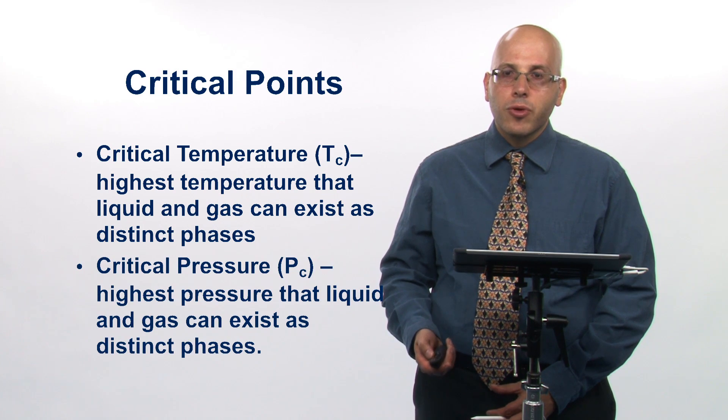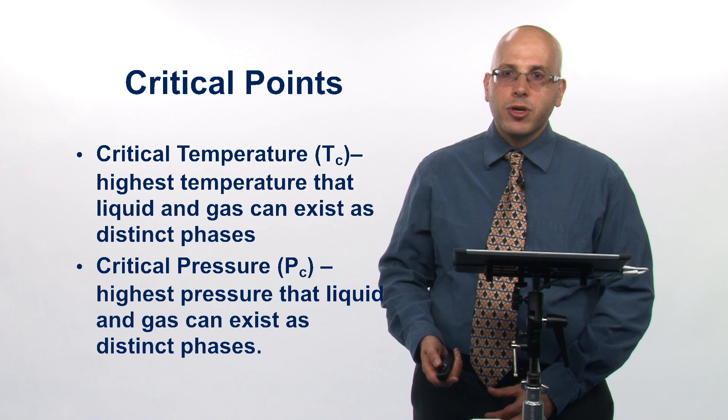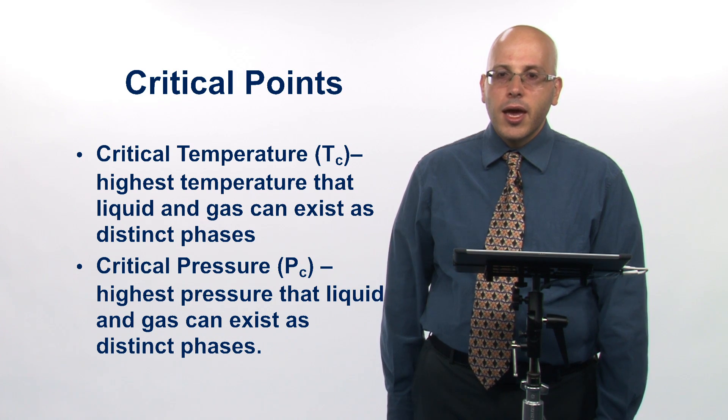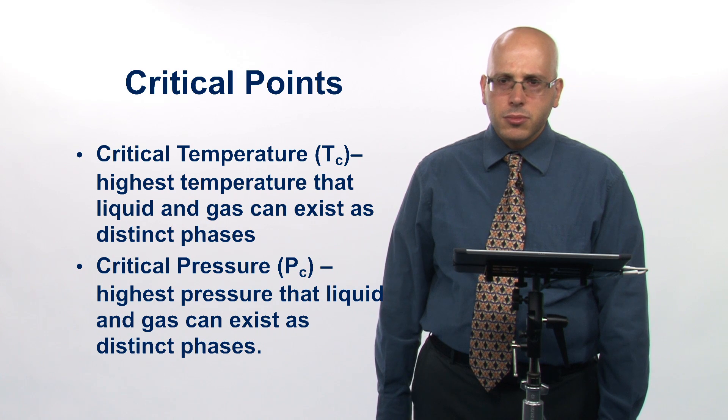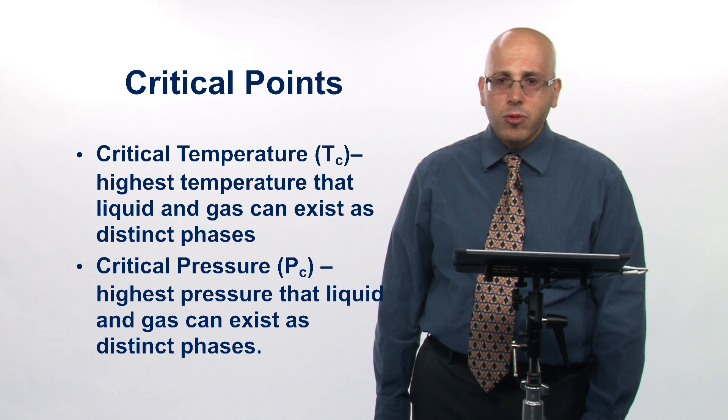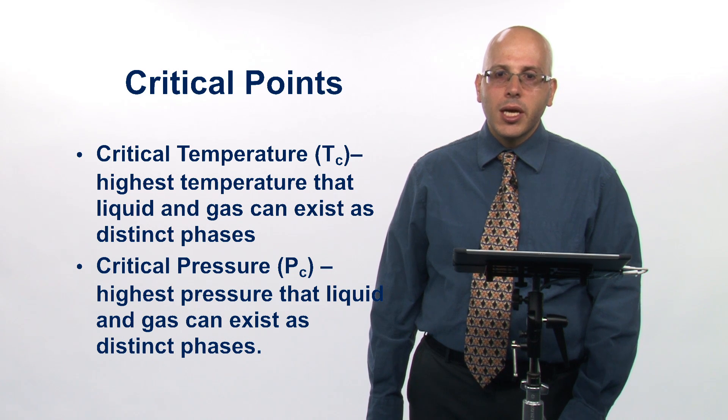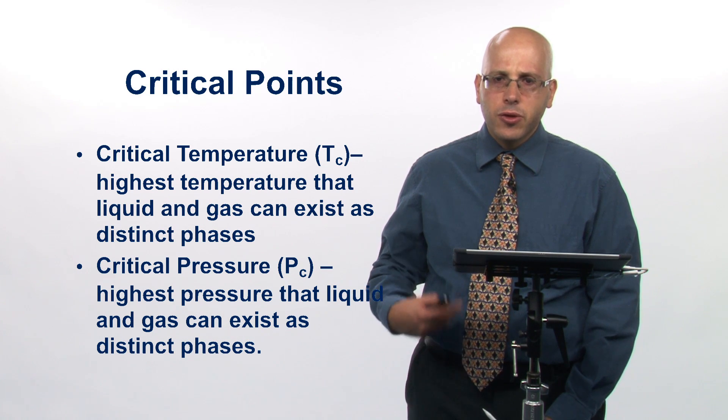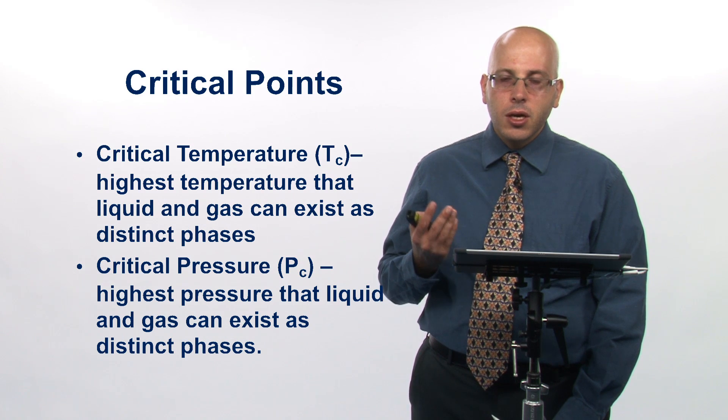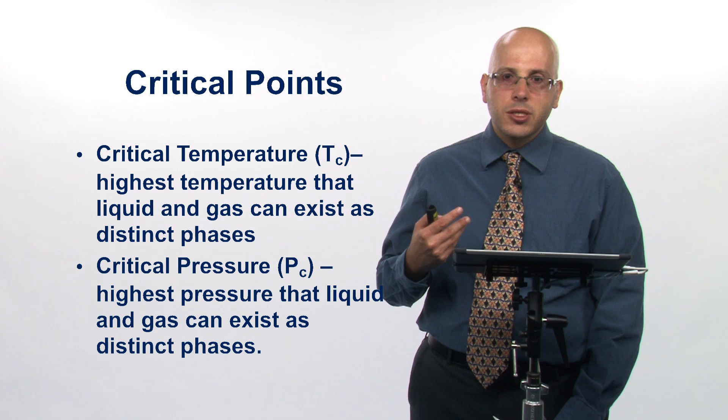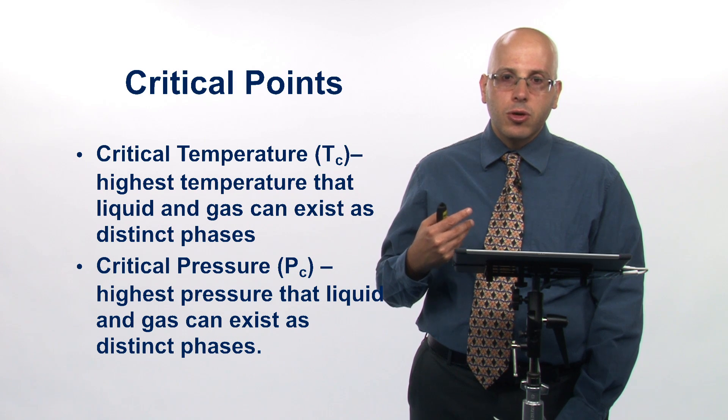There's also something called the critical pressure, which is the highest pressure where the gas and the liquid can exist as distinct phases as well. If I go above the critical pressure, then I can't really distinguish between the liquid and the gas anymore. So in other words, I could always produce a liquid just by decreasing the temperature of the gas as long as I'm below that critical pressure.